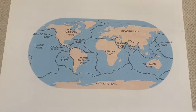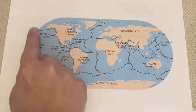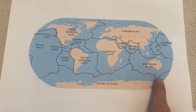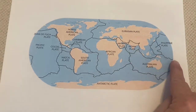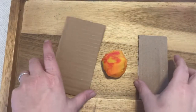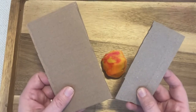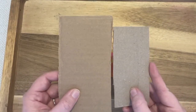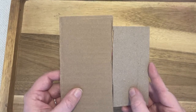The tectonic plates are like the skin of the earth. There are eight major plates and many smaller ones. They are consistently moving. The tectonic plates rest on top of molten rock. If we pretended like these were plates on our earth, then the way that the plates come together is called a plate boundary.